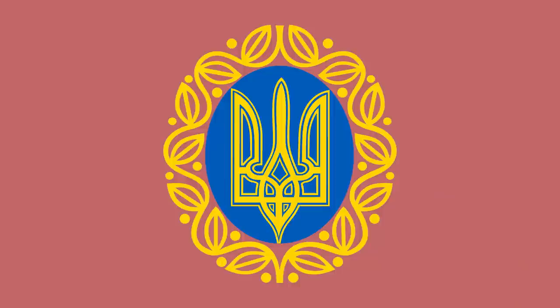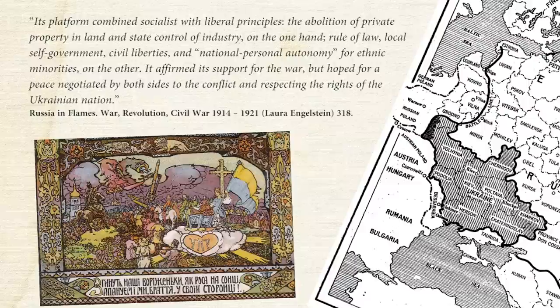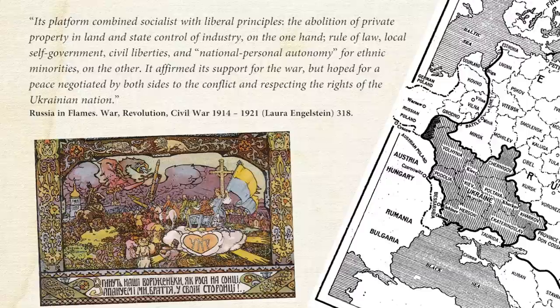Then in October, or November, the October Revolution took place. At first the Rada supported it, because they saw it as a deepening of the revolution, but soon they condemned it. Inaugurated on the 7th of October 1917, the Ukrainian National Republic — the UNR, also known as the Ukrainian People's Republic — was seen as an autonomous Ukraine within a democratic Russian state. Its platform combined socialist with liberal principles: the abolition of private property and land and state control of industry on one hand, and rule of law, local self-government, civil liberties, and national personal autonomy for ethnic minorities on the other. It affirmed its support for the war but hoped for a peace negotiated by both sides and respecting the rights of the Ukrainian nation.